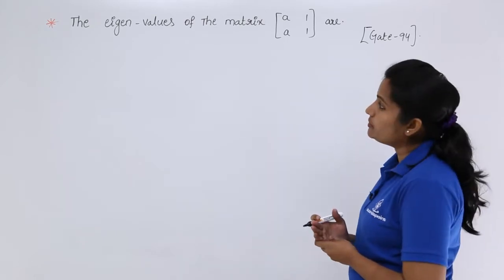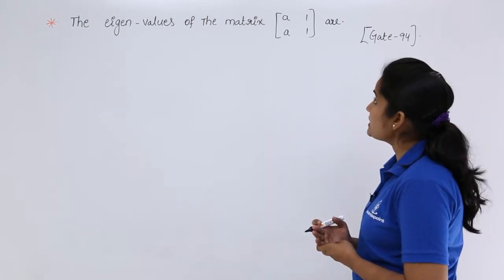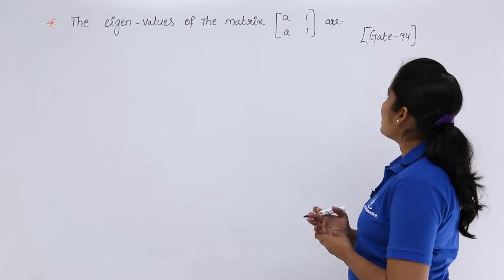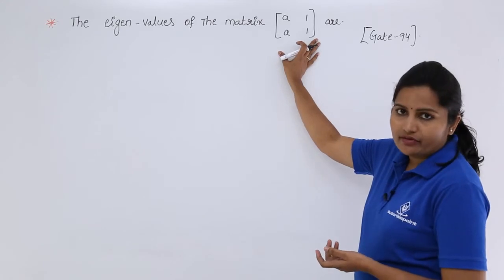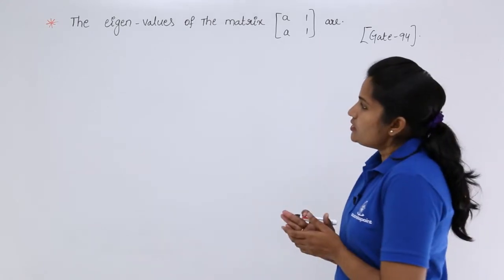Just observe the problem: the eigenvalues of the matrix A1 are... Whenever you get a problem like this, you just treat it like an A matrix. This is the A matrix.